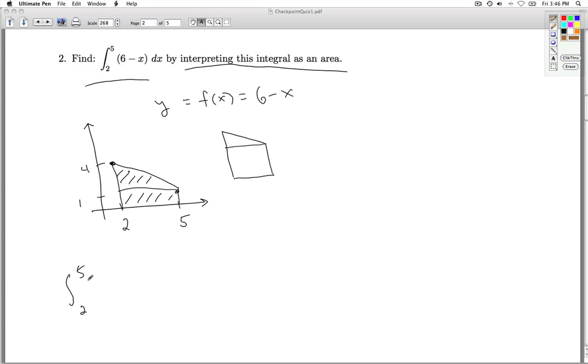So the integral from 2 to 5, 6 minus x dx, is the area of the triangle, which I'll call T, plus the area of the rectangle, which I'll call R. The area of a triangle is 1 half the base times the height.